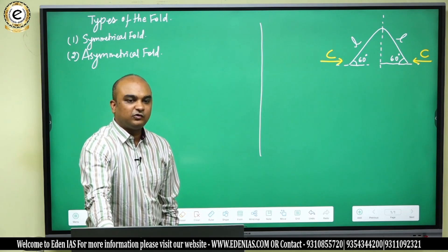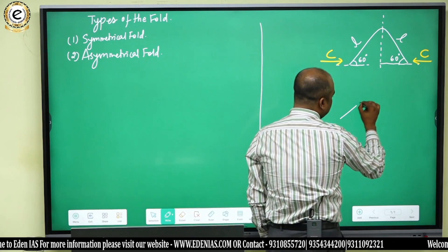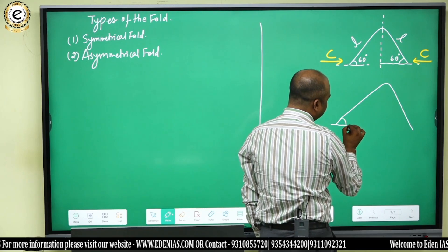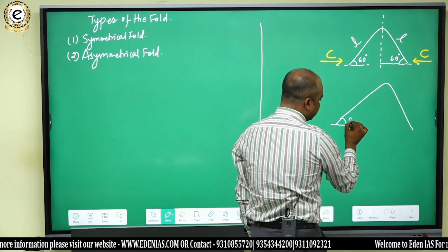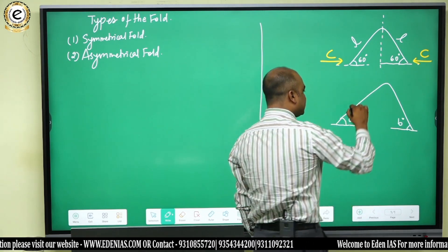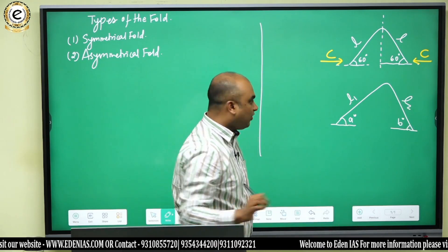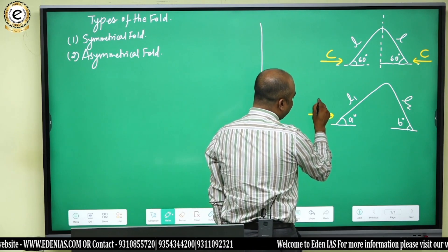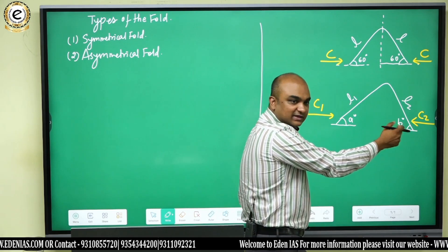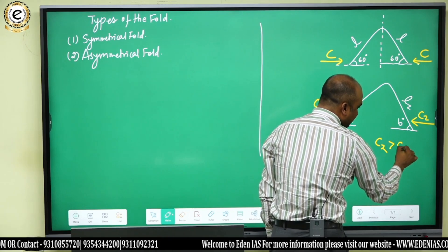Now, if you have understood the symmetrical fold, understanding asymmetrical folds is not difficult at all. An asymmetrical fold is one in which both the limbs make a different angle — suppose one is 'a' degrees and the other is 'b' degrees — or the limbs are of different lengths. The compressive forces are also different; one side (C2) has more force, which is why that angle is steeper. So C2 is greater than C1.